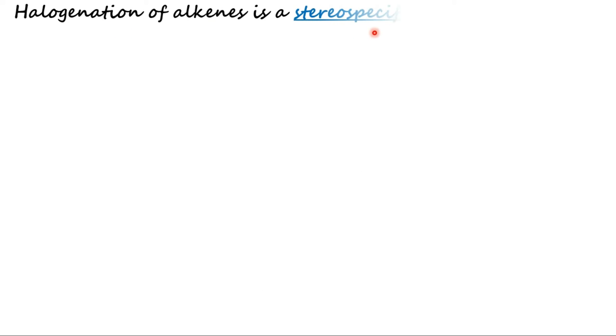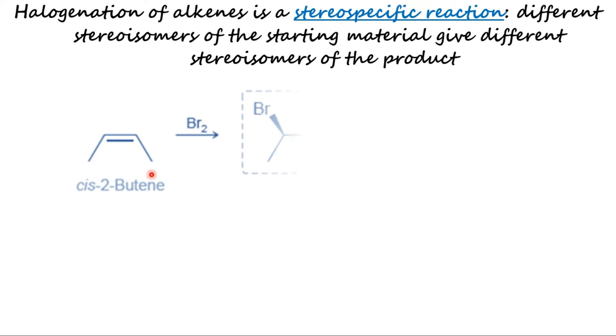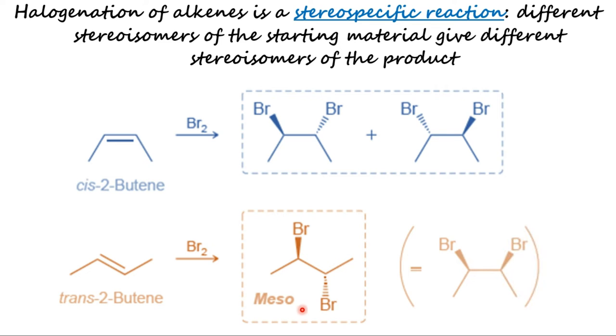Halogen addition is another example of a stereospecific reaction in which different stereoisomers of the starting material give different stereoisomers of the product. For example, cis-2-butene will yield different products than trans-2-butene. Anti-addition across cis-2-butene leads to a pair of enantiomers, while anti-addition across trans-2-butene leads to a meso compound. These examples illustrate that the configuration of the starting alkene determines the configuration of the product for halogenation reactions. Let us work out how this happens.